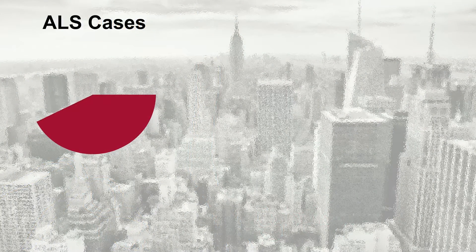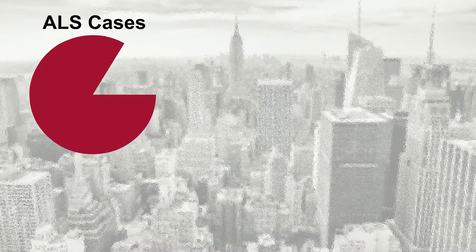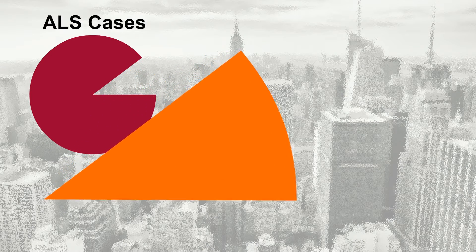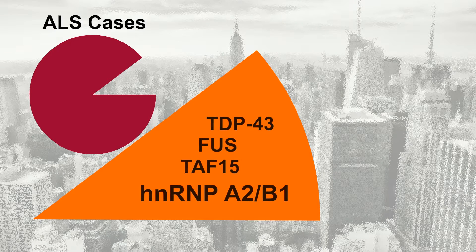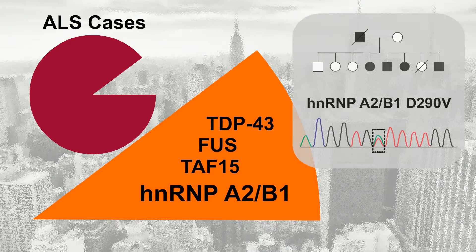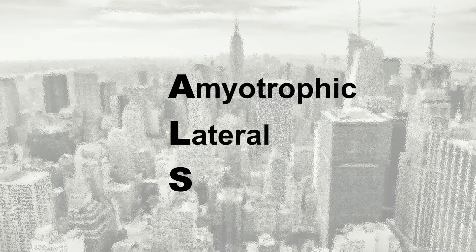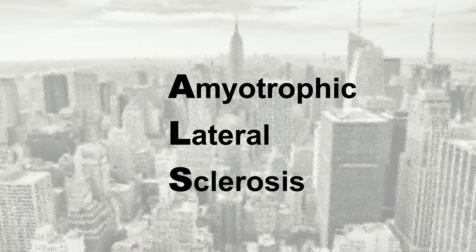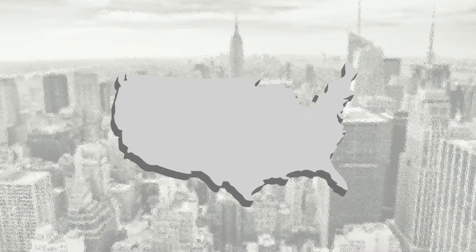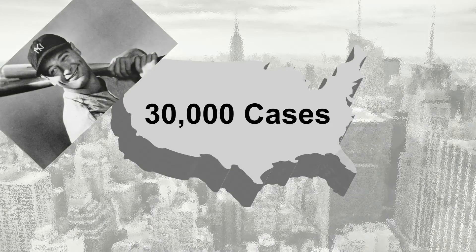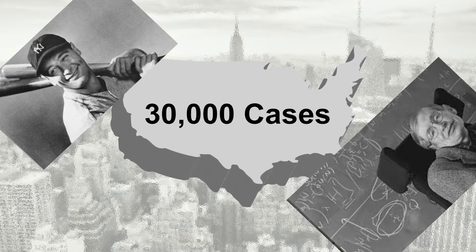One reason why we study RNA-binding proteins is to learn how to treat disease. ALS is a disease where a significant number of the cases are caused by mutations in RNA-binding proteins. In 2013, a family was discovered with a mutation in HNRNP A2B1. This is why we chose to study this particular protein. ALS stands for amyotrophic lateral sclerosis. It's a neurodegenerative disease affecting up to 30,000 Americans in any given year. Two famous people with ALS are Yankee great Lou Gehrig, for which the disease is named, and the physicist Stephen Hawking.